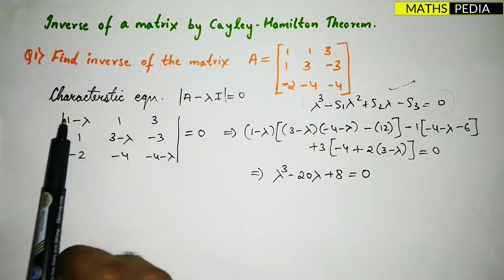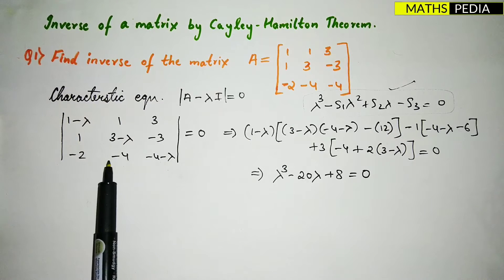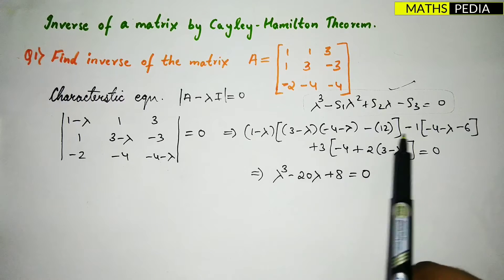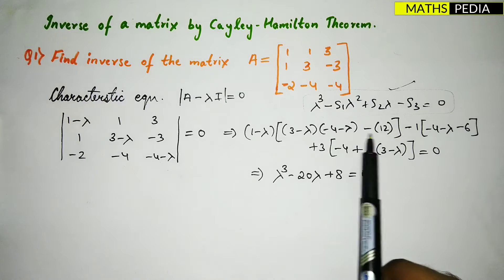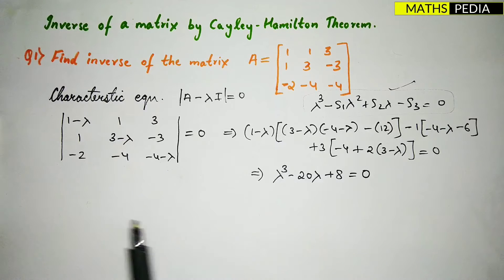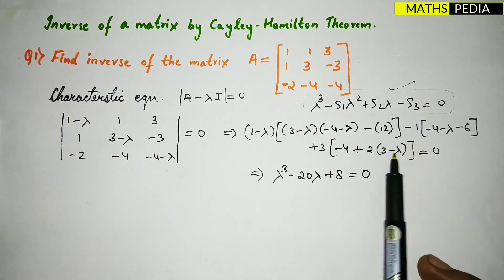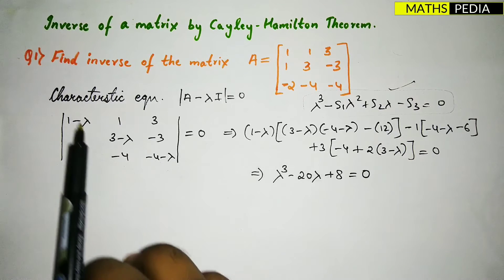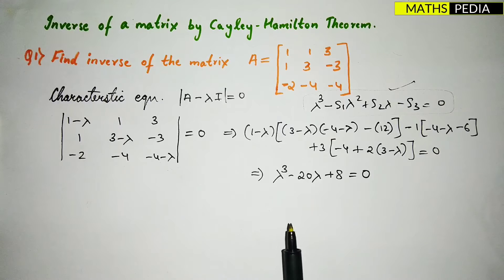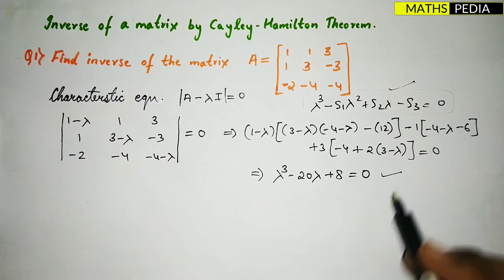To find the determinant, expand along the first row. For each element, find the corresponding 2×2 minor — for example, (1 - λ) times its minor minus the next element times its minor, and so on. After expanding and simplifying all terms by multiplying out and combining, you get the characteristic equation.